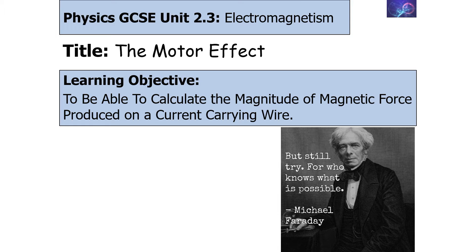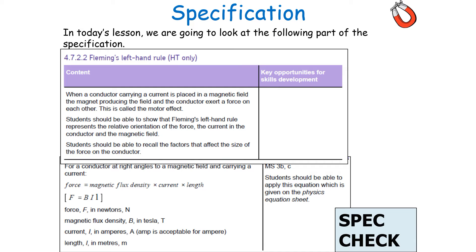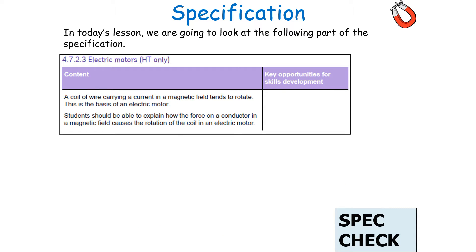In today's lesson we're going to calculate the magnitude of a magnetic force on a current carrying wire. If we're successful, we should be able to describe the principles of electromagnetism, describe the effects of the motor effect, and calculate the magnitude of magnetic force on a current carrying wire, which falls into AQA GCSE Separate Science Specification 4.7.2.2 Fleming's left-hand rule and 4.7.2.3 electric motors.